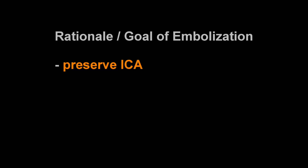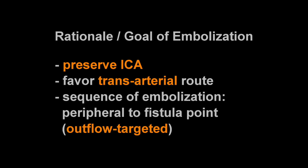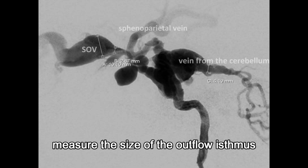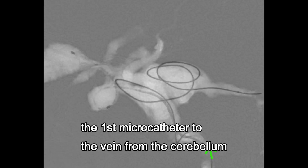The rationale of embolization is to preserve the ICA. We favor the transarterial route first, and the sequence of embolization is from the peripheral to the fistula point — outflow targeted. We navigated microcatheters into each outflow channel.